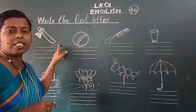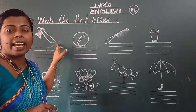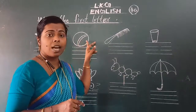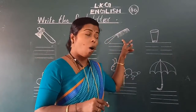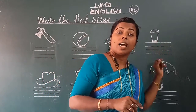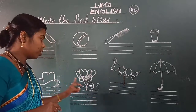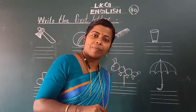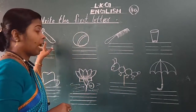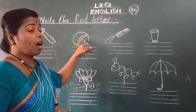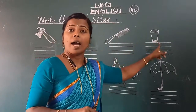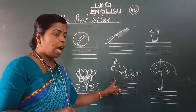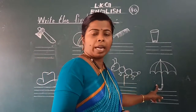See the first picture. What is this? Yeh kya hai? Axe. And this is ball, this is comb, this is glass, hat, lotus and umbrella. Okay? Say once again: axe, ball, comb, glass, hat, lotus and umbrella.